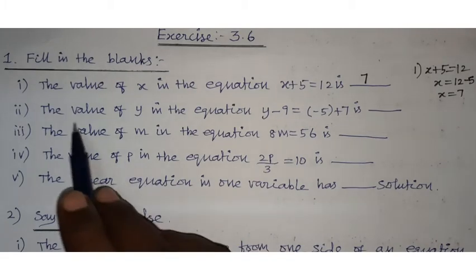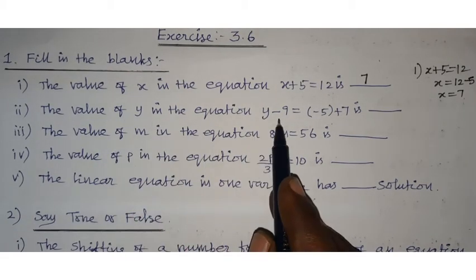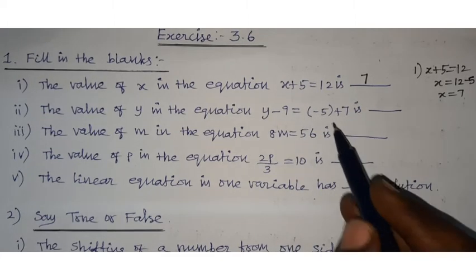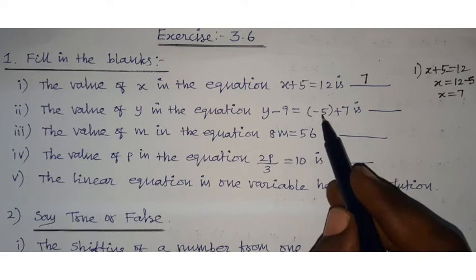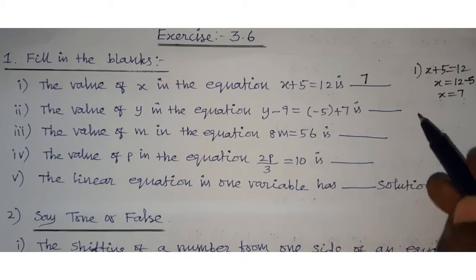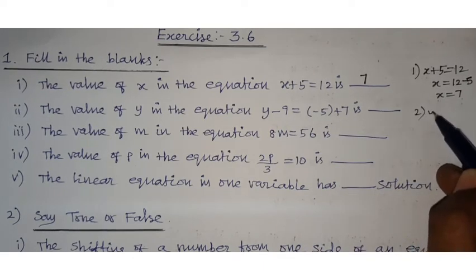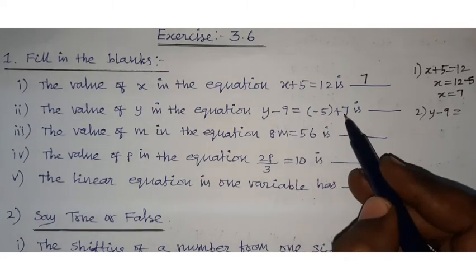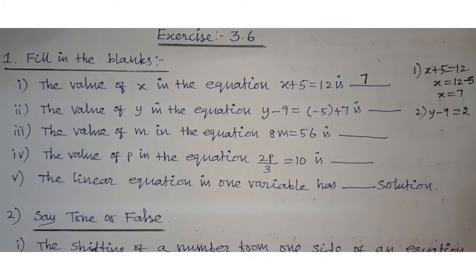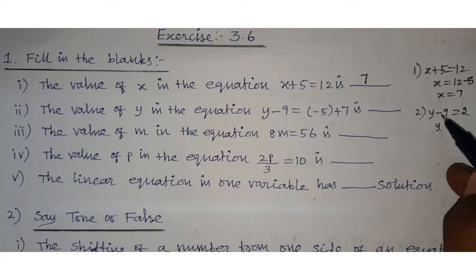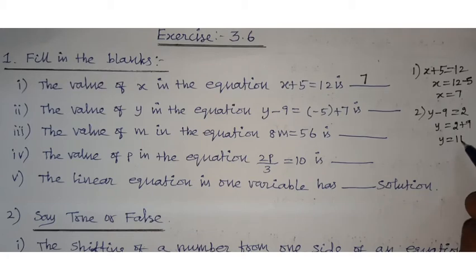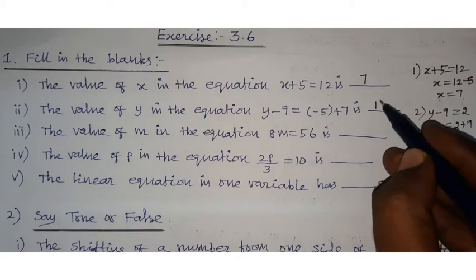Second question: the value of y in the equation y minus 9 equals minus 5 plus 7. First simplify the right-hand side: minus 5 plus 7 equals 2. Now bring minus 9 to the other side as plus 9, so y equals 2 plus 9, therefore y equals 11.